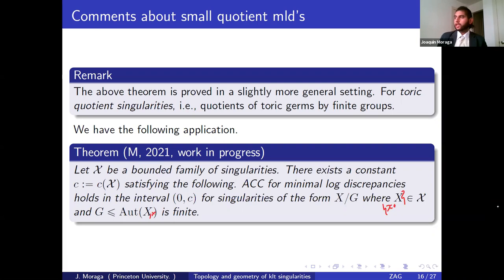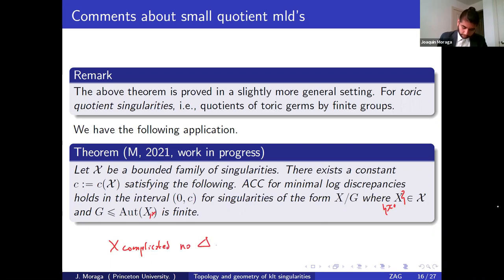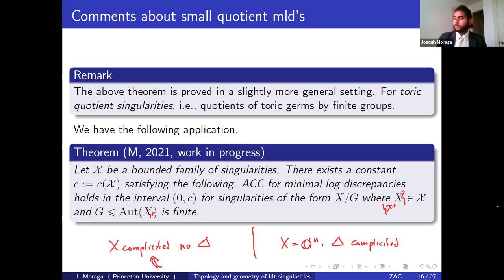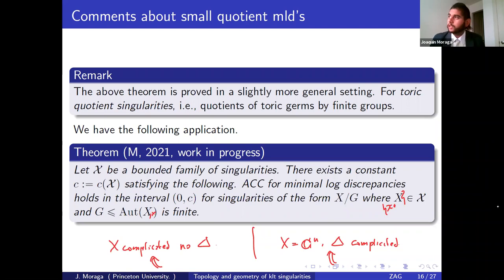I think ACC has two sorts of flavors: one where X is complicated and Δ is absent, and one where X is simple — say a smooth point — and Δ is complicated. From what I've been talking about, I mostly care about the first part. I think for termination of flips, the first part should suffice. Entirely different arguments will be needed for the other direction.